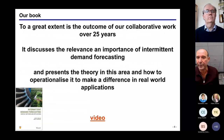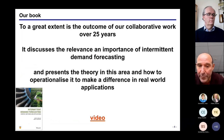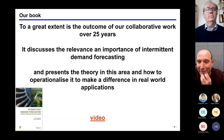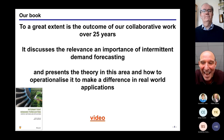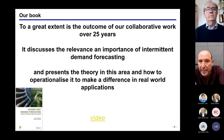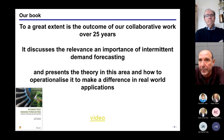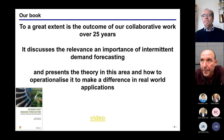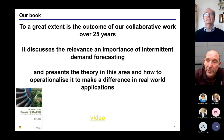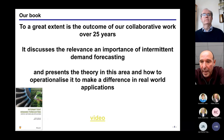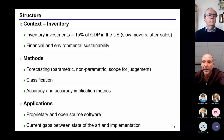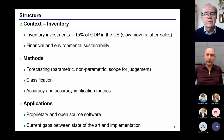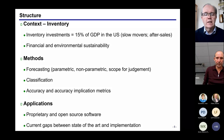Let me make a start. I would like to show you a video that John and I prepared about our book. Our book, at a higher level, discusses the relevance and importance of intermittent demand forecasting. We believe this is an area of exceptional importance with serious financial and environmental implications. It presents the theory in the area and also how we can operationalize things and hopefully make a difference in real-world applications. So the subheading of the book is Context, Methods and Applications.